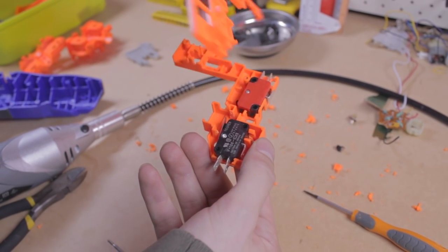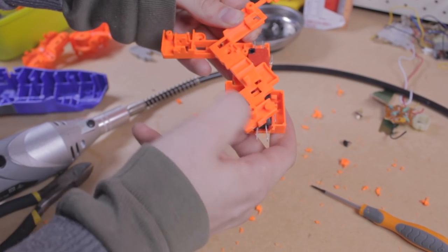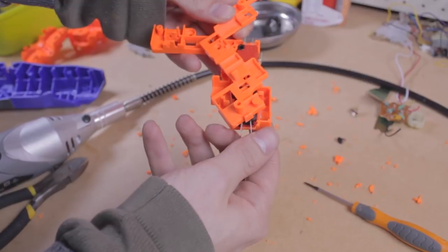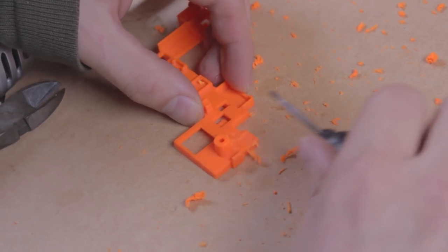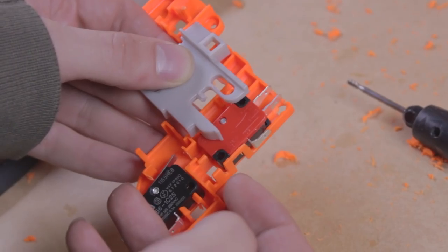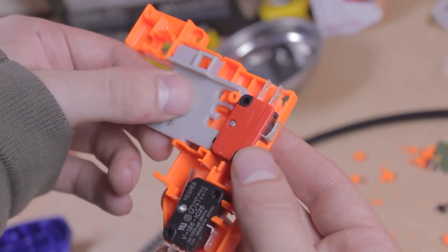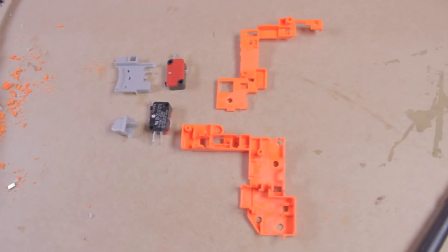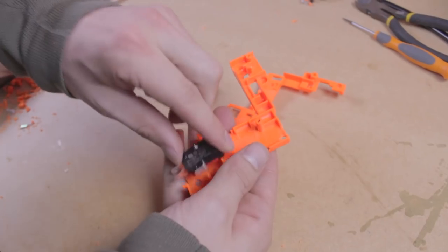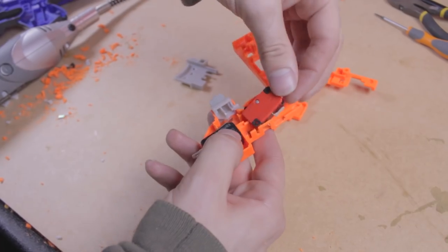We also need to dremel down the covering plate so that it fits back on. Again this will depend on the exact switches you have and how you fit them into this piece. The trigger will also need adjustment to fit. Dremel down the surfaces very carefully and gradually until it nicely fits and activates your microswitch. This is what everything looked like when I was done. This bit is done so let's piece it back together.